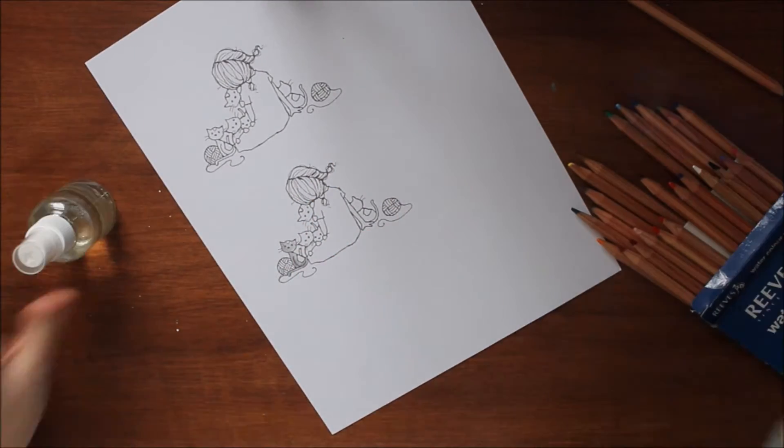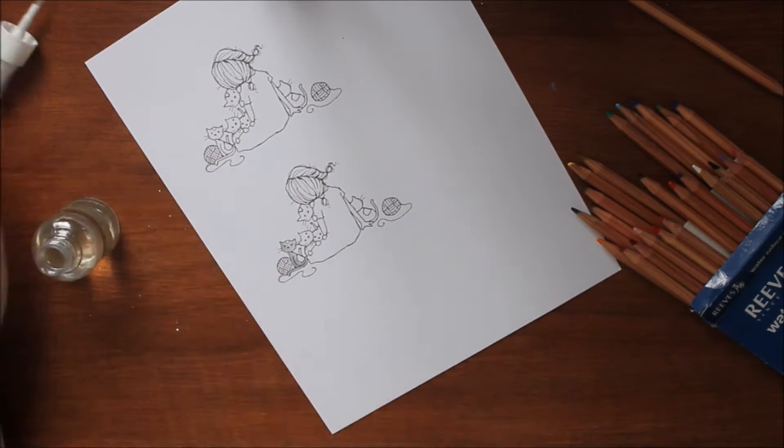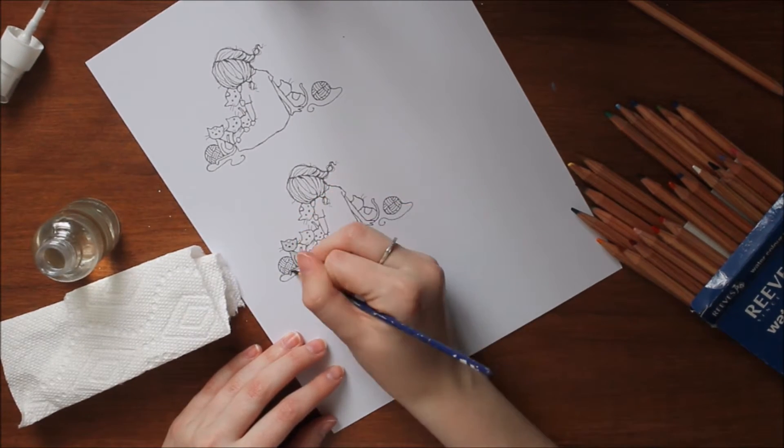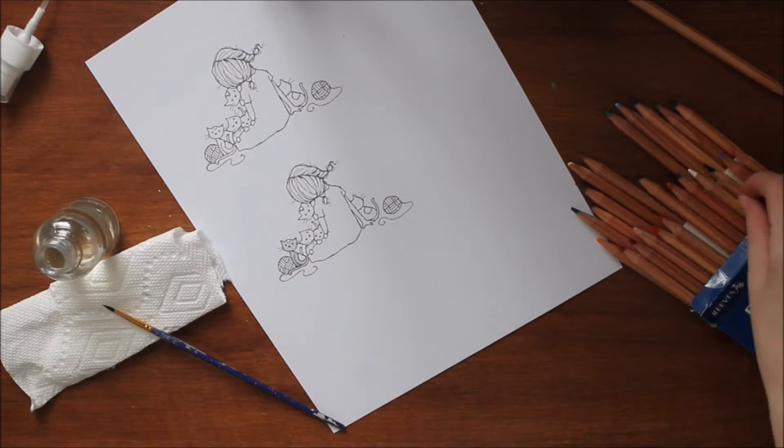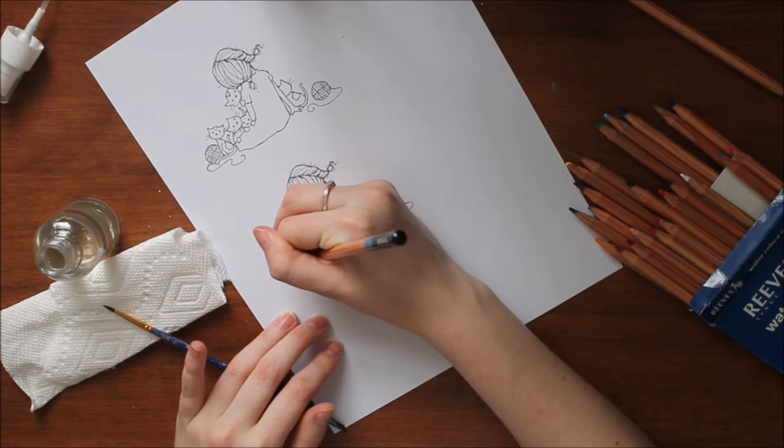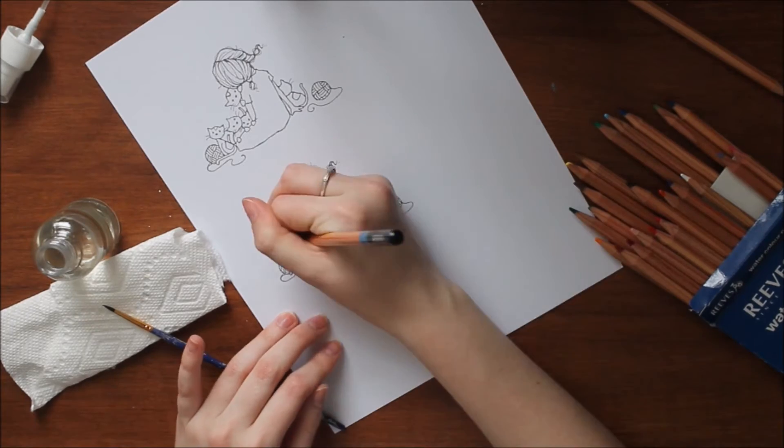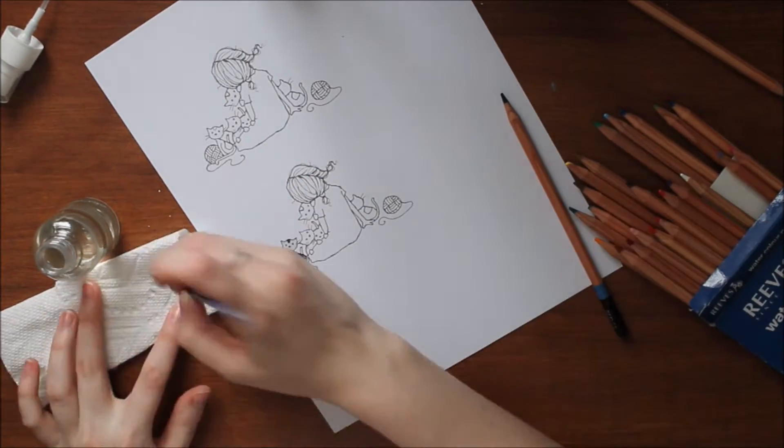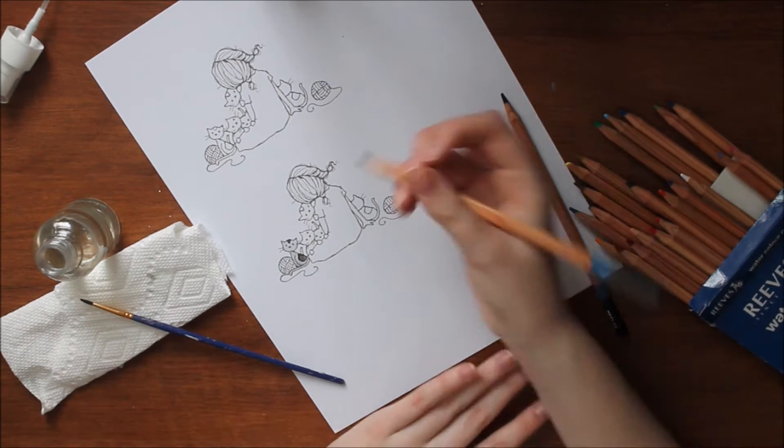First I'm starting with my Reeves watercolor pencils, which you'll see me working here with on this image. The winner of this month's challenge, if you do participate, which I highly encourage, will win a stamp set from A Day for Daisies, a physical stamp set. So if you're not into the digital, don't worry because you're getting a nice physical stamp set.